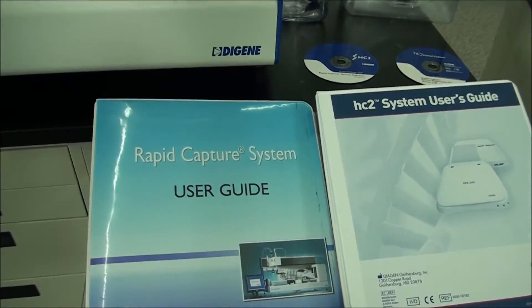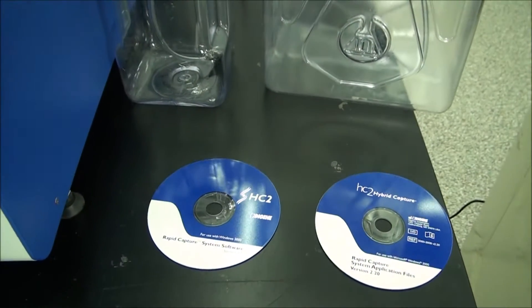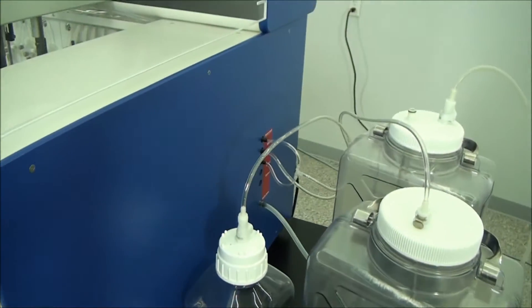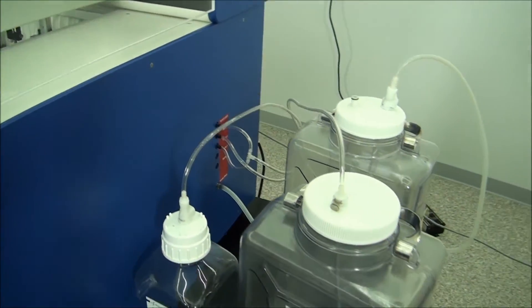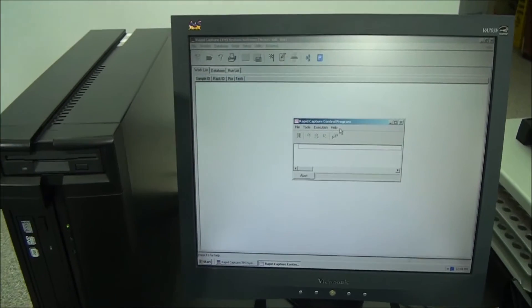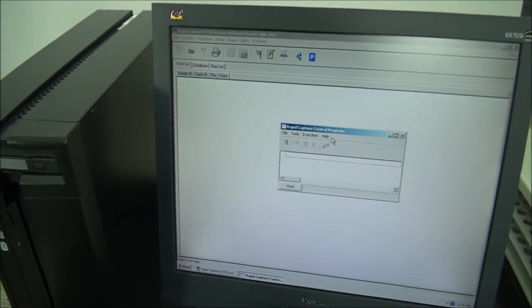Included with the rapid capture system are the software user guides, rapid capture and hybrid capture software disks, three wash bottles, a computer with software installed, four specimen tube racks, a DML 2000 Lumacheck plate manual, and a tube sealer dispenser.